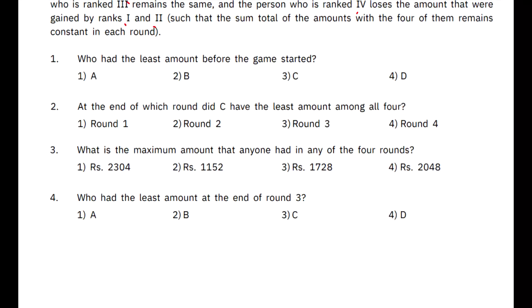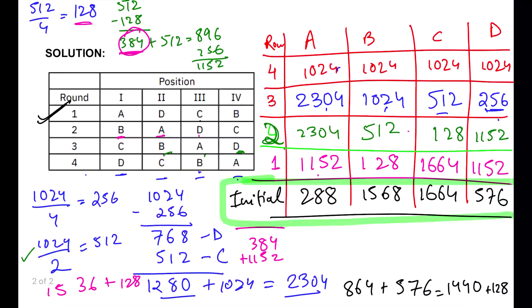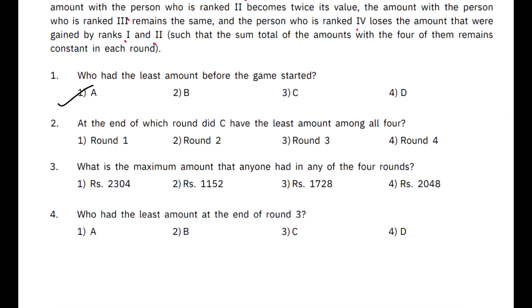Who had the least amount before the game started? So, before the game started, we had the least amount with A. So, therefore, the answer of this question will become option 1, A.